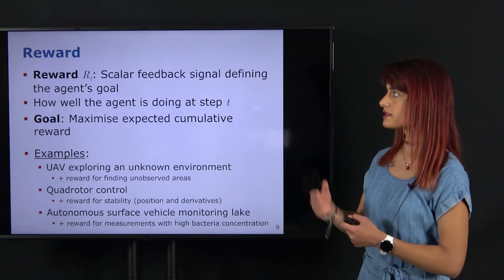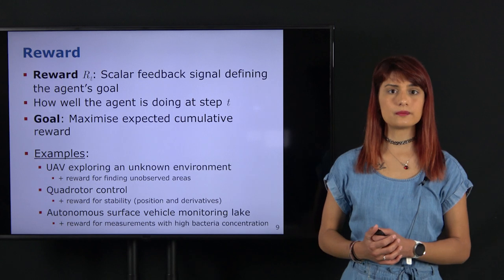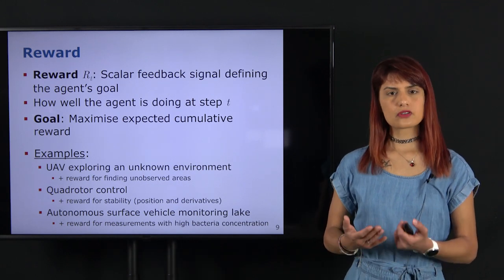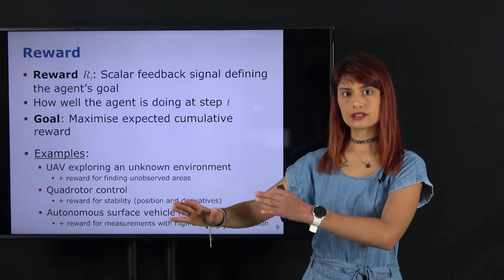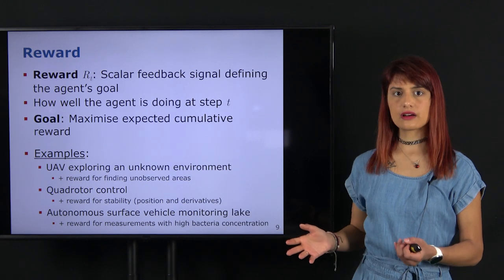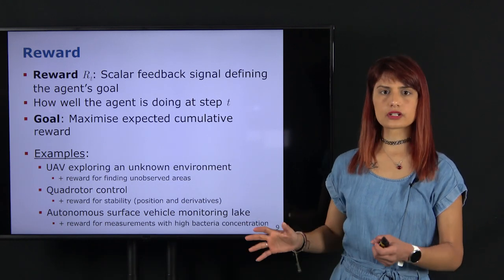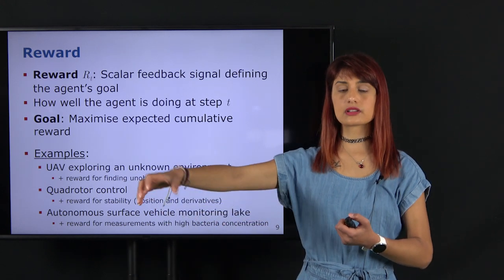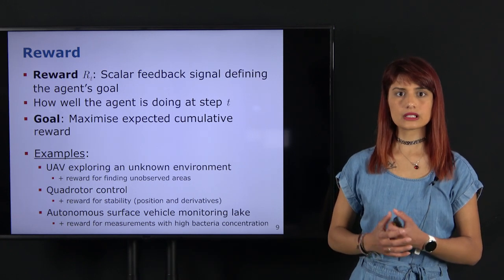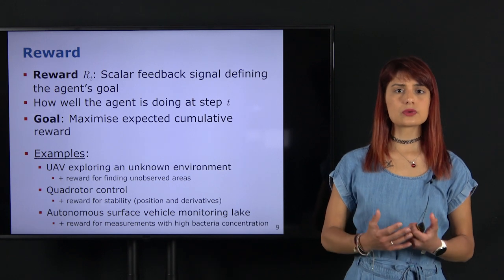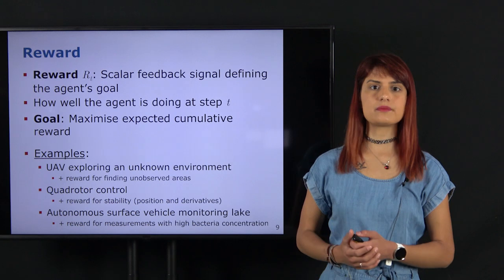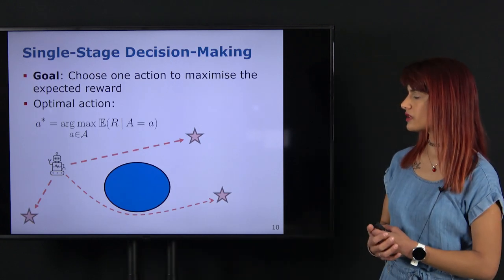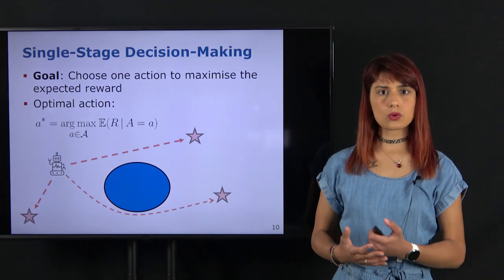Rewards can be defined in very different ways. Since the reward is a scalar and real value, it can also be negative. For example, if we want the robot to reach a particular goal location, we could assign negative reward in all configurations apart from the goal, or we could gradually increase the reward the closer the agent gets to the goal. This is a design decision that will essentially reflect how the agent learns the best actions to take in the decision-making problem.